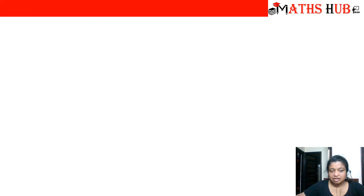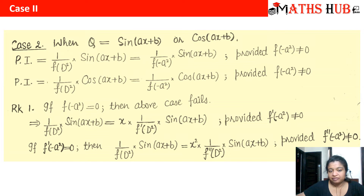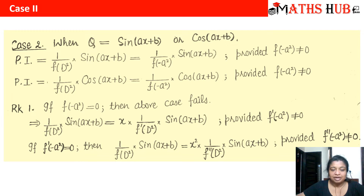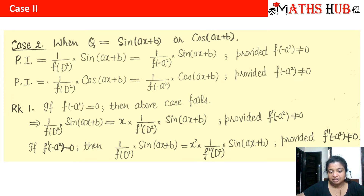The second case is when we deal with trigonometric functions like sin(ax + b) or cos(ax + b). We replace D² with −a². If the denominator becomes 0, it is a case failure: we multiply by x in the numerator and take the derivative of the denominator.